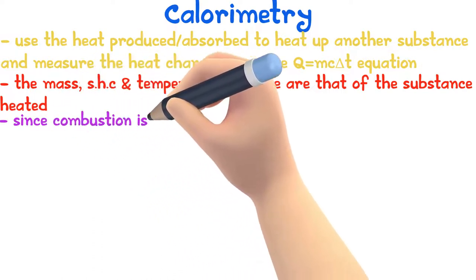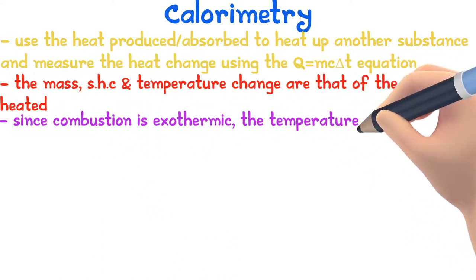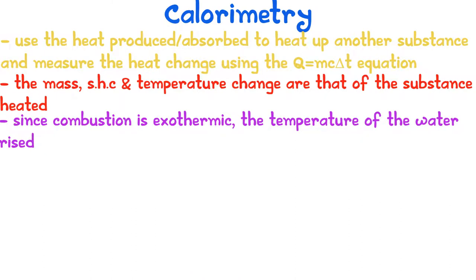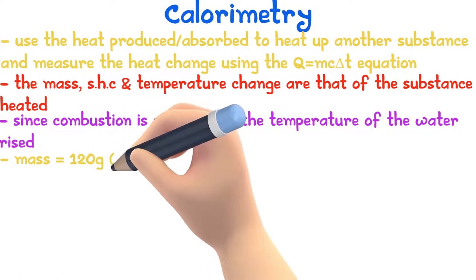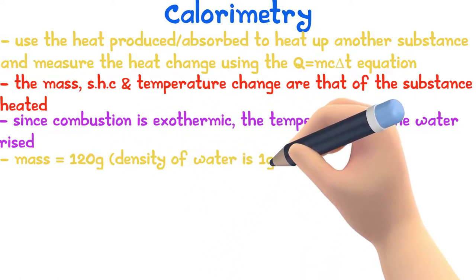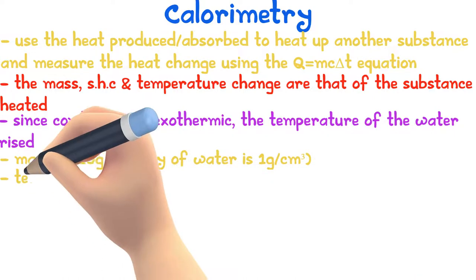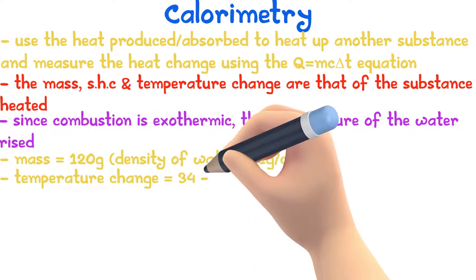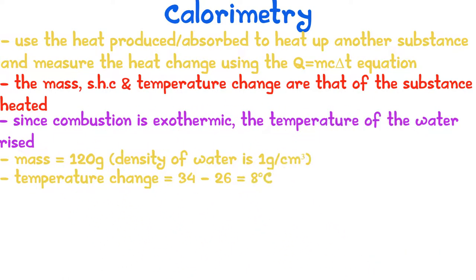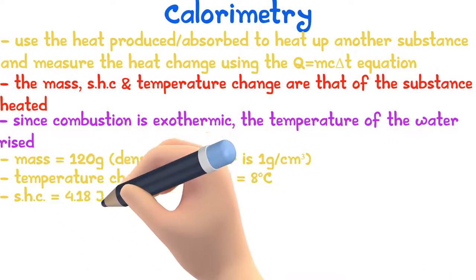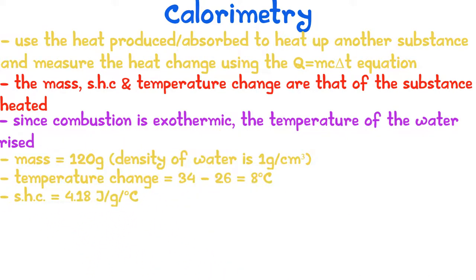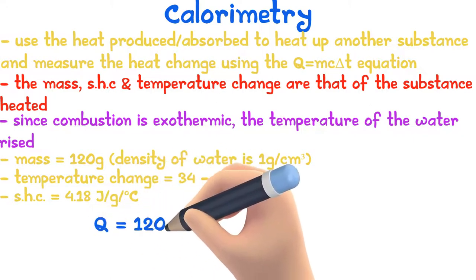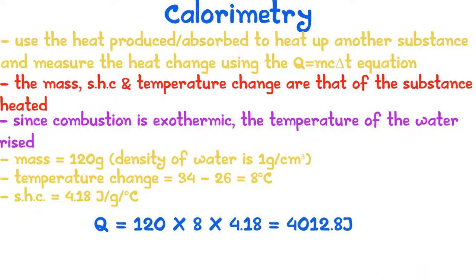Since combustion is an exothermic reaction, the temperature of the water goes up. When we apply the data to the Q equals MC delta T equation, the mass would be 120 grams, as the density of water is 1 gram per centimetre cubed. The temperature change would be 34 minus 26, which is 8. The SHC of water is 4.18 joules per gram per degree Celsius. Substituting all values and multiplying, our final answer is 4,012.8 joules — the heat gained by the water.